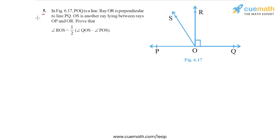Question 5 is an interesting question. You may find it slightly tricky. In figure 6.17, POQ is a line. Let's highlight this line POQ. This is a straight line.